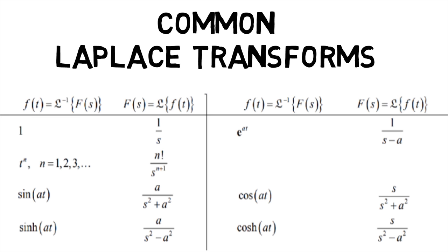Laplace transform of e power at is 1 upon s minus a. For trigonometric functions like sin at and cos at, it is a upon s squared plus a squared and s upon s squared plus a squared respectively.